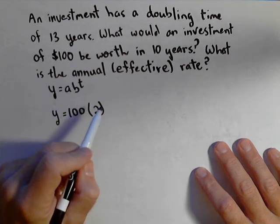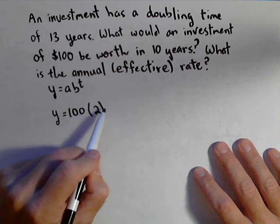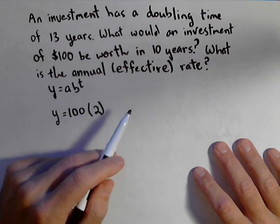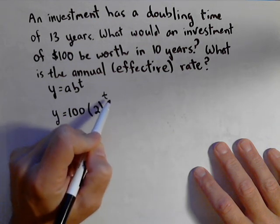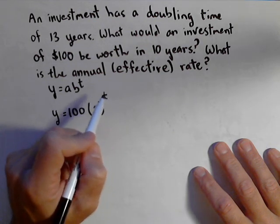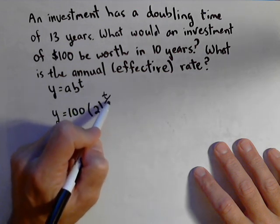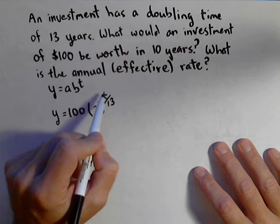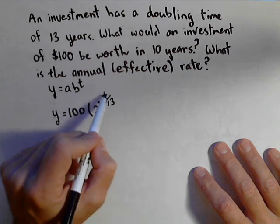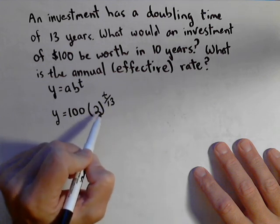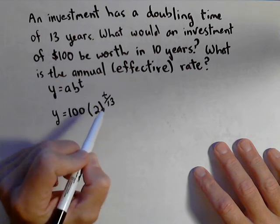It doubles every 13 years. So I wanna make my function so that every time I put 13 in for an input of 26 or a multiple of 13, I multiply by another two. So I'm not gonna make it just 2 to the t, because then t would have to be in units of 13, which is awkward. So what I do is I'm gonna make my exponent t over 13. Because now every time I put a 13 in, 13 over 13 is one, I multiply by a two. 26 over 13 is two, I multiply by two twos. So this model handles doubling time of 13 years.